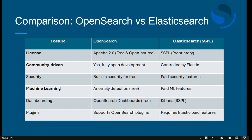Now let's compare OpenSearch versus Elasticsearch. For licensing, OpenSearch uses Apache 2.0 which is free and open, while Elasticsearch uses the proprietary SSPL license. OpenSearch is community-driven with fully open development, whereas Elasticsearch is controlled by Elastic. OpenSearch has built-in security for free; Elasticsearch has paid security. Machine learning anomaly detection is free in OpenSearch but paid in Elasticsearch. Dashboards are free in OpenSearch but SSPL-proprietary in Kibana. OpenSearch supports open plugins; in Elasticsearch, advanced features require payment.